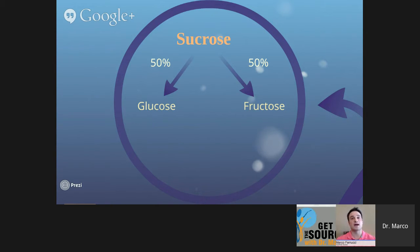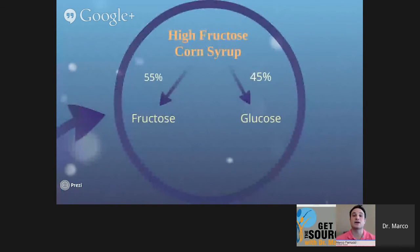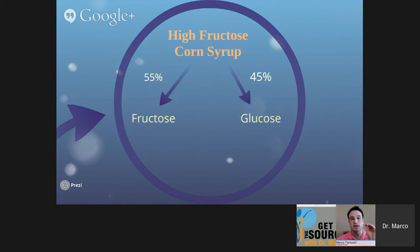Then we have high fructose corn syrup, which has a higher percentage of fructose — 55% fructose and 45% glucose. You're going to understand the importance of glucose very shortly, but fructose is what we're going to focus on right now, and we're going to break it down into those categories.